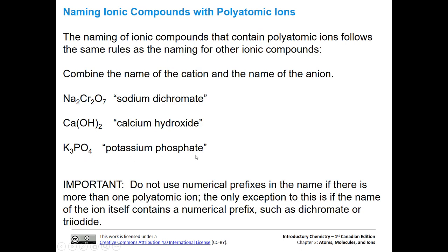For potassium phosphate: the phosphate anion is three minus. Because you have that memorized, you know you need three potassium cations to offset that charge, so you write potassium with subscript three for one phosphate anion. The compound name is potassium phosphate. You're not going to use numerical prefixes even if there's more than one polyatomic ion — the only exception is if the polyatomic ion already includes a prefix in its name, such as sodium dichromate or triiodide. Those prefixes are kept because they're part of the name of the polyatomic ion.